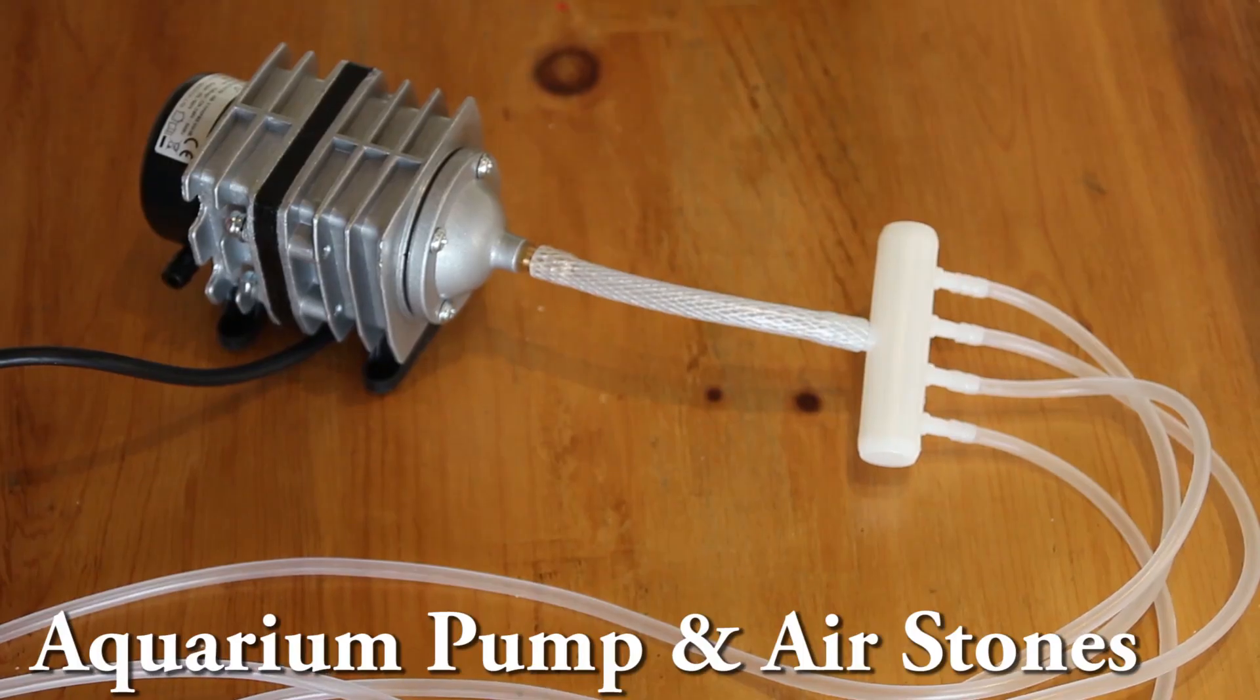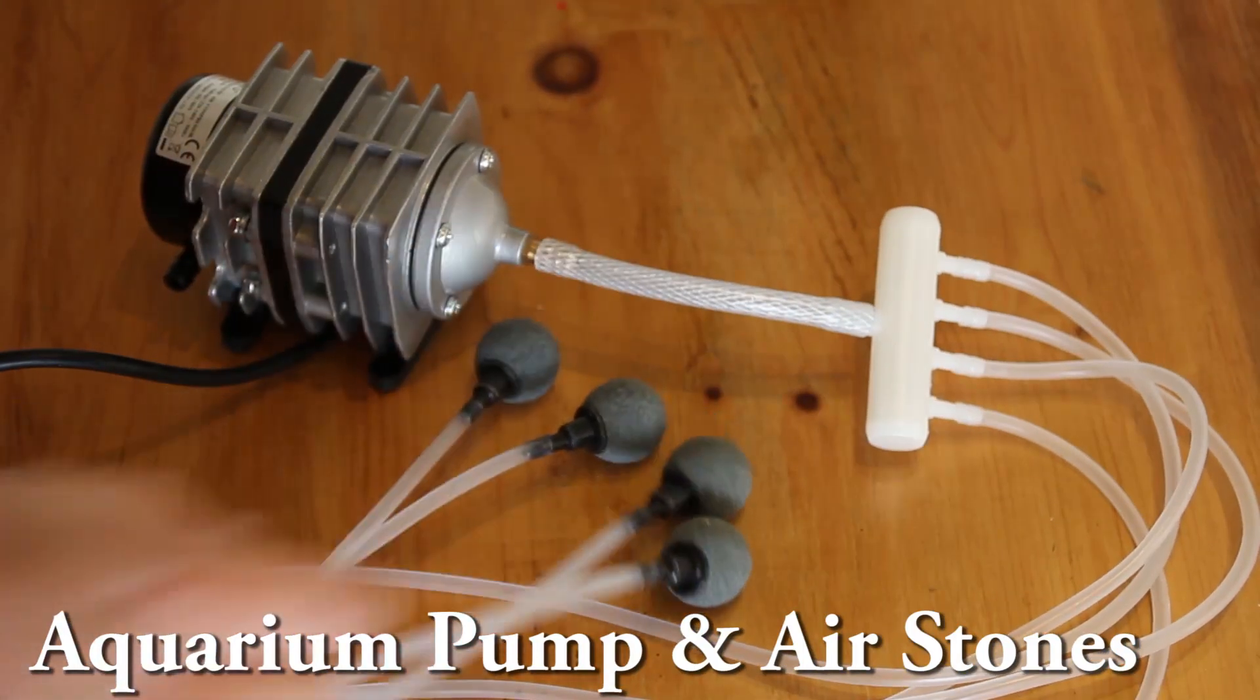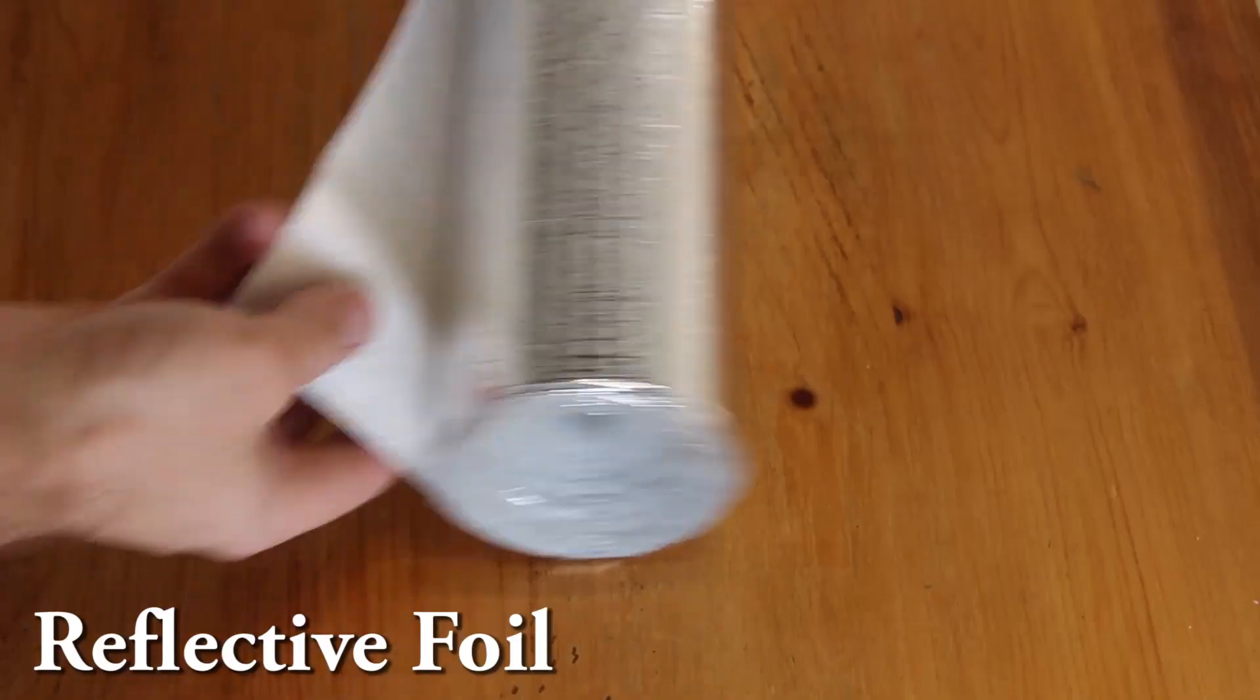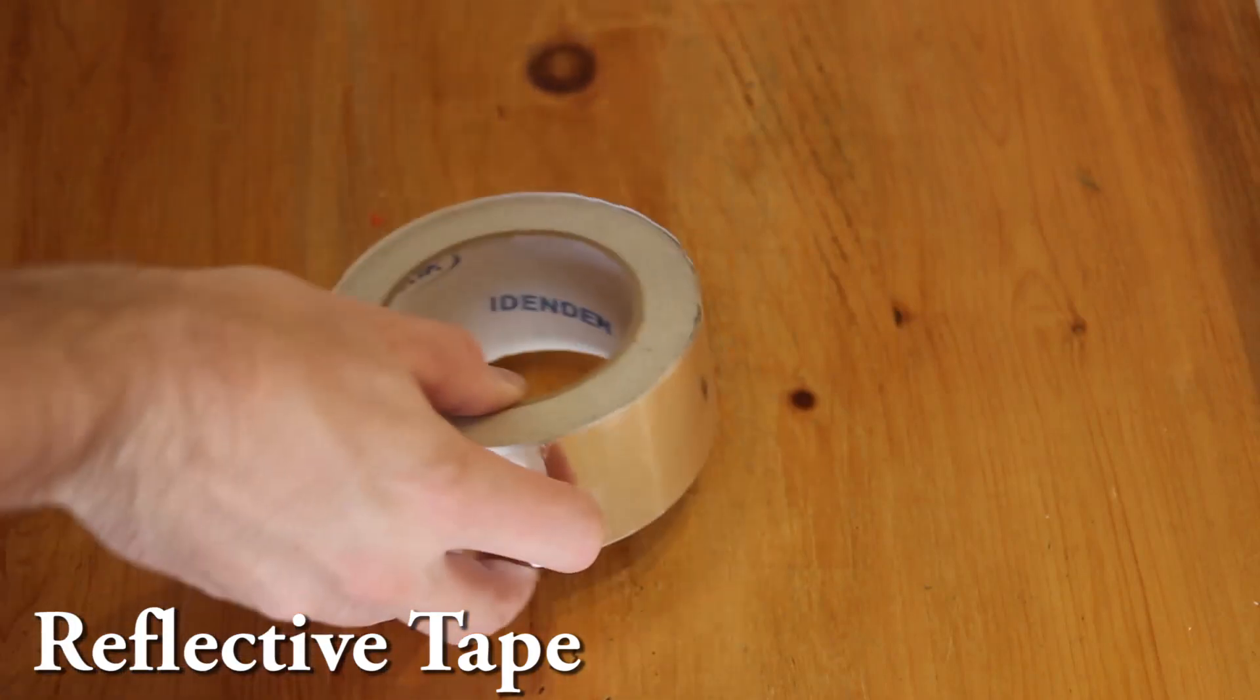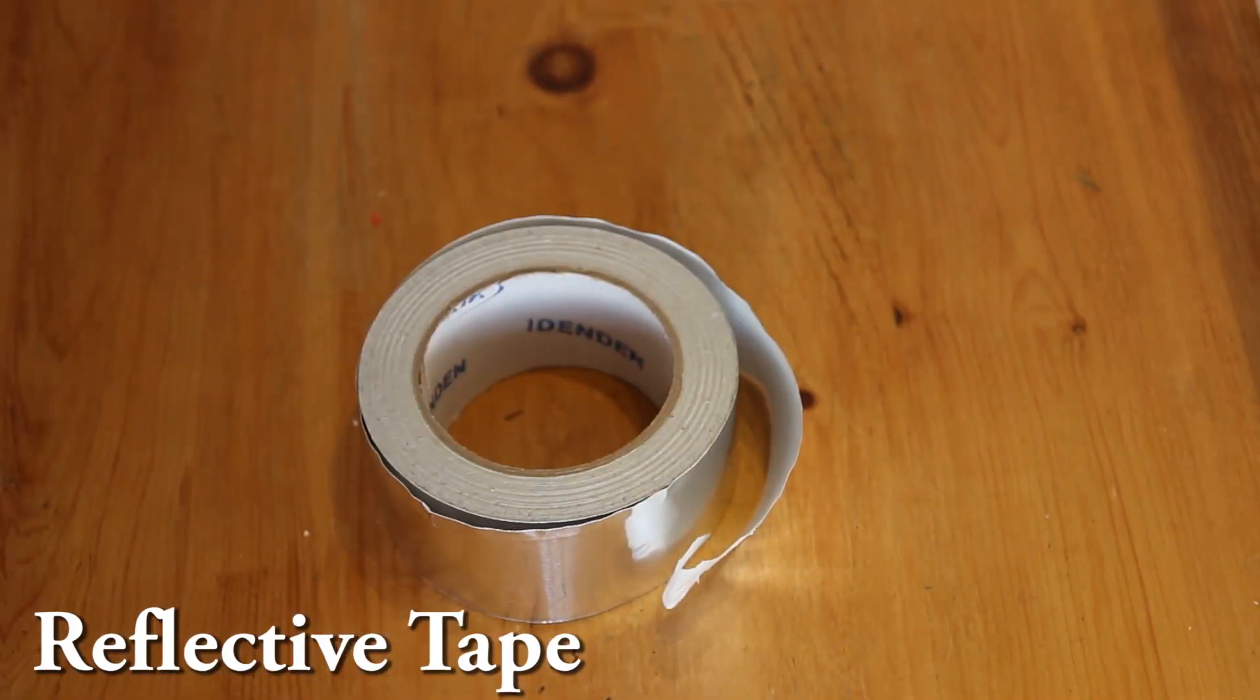We'll need an aquarium air pump with some air stones. The larger the better. And then since my box is clear I need some of this reflective foil. I'm also using some reflective tape just to hold the reflective foil down.